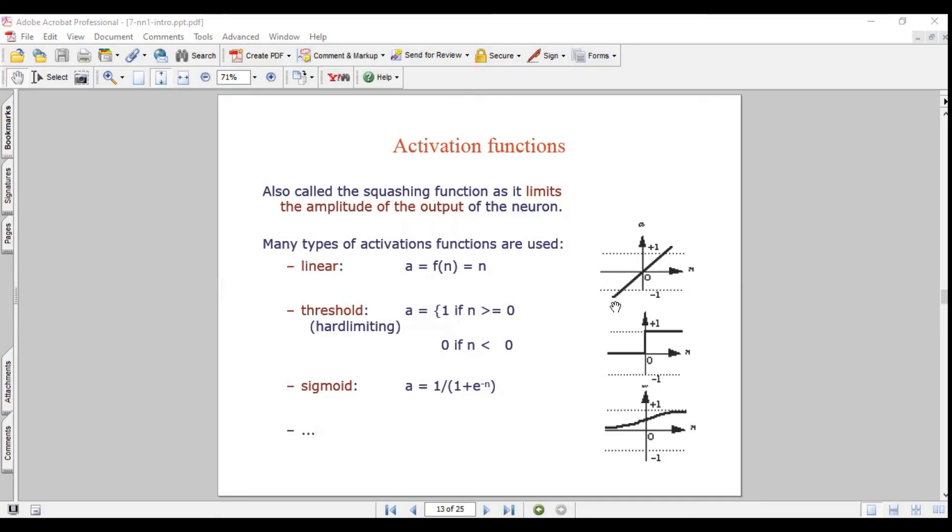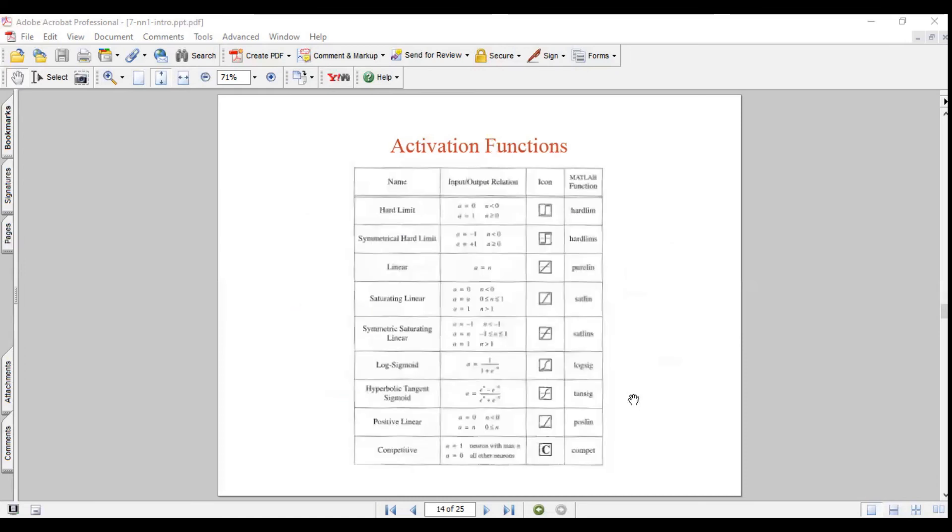In the linear, you can see a line is drawn, and here this is plus 1 and 0. All 0 values will be on this side, and the plus 1 value will be on this side. Threshold is hard limiting, 0 to 1. Sigmoid also, 0 to 1. Various activation functions you can see: hard limit, symmetric hard limit, linear, saturating linear, symmetric saturating linear, log sigmoid, hyperbolic tangent sigmoid, positive linear, and others. There are various activation functions available.